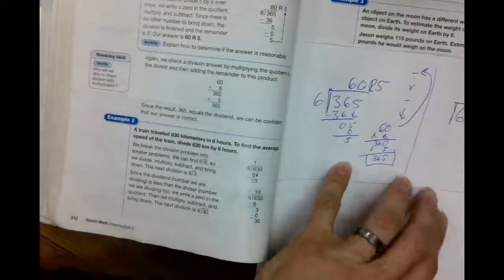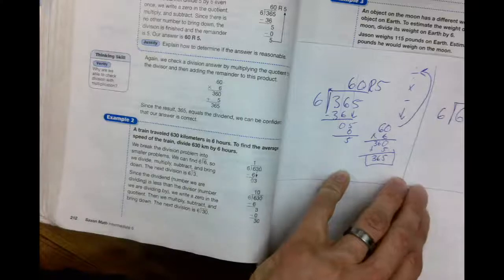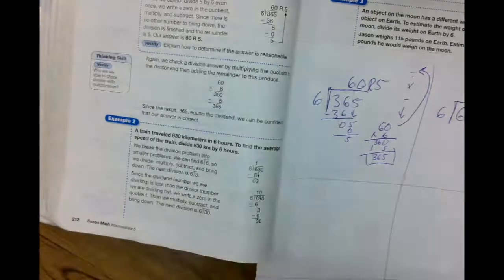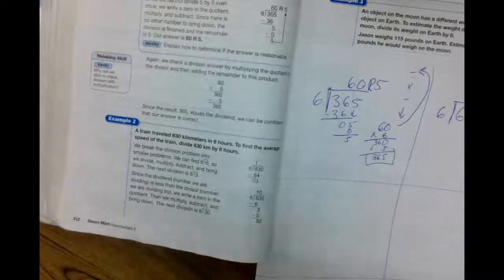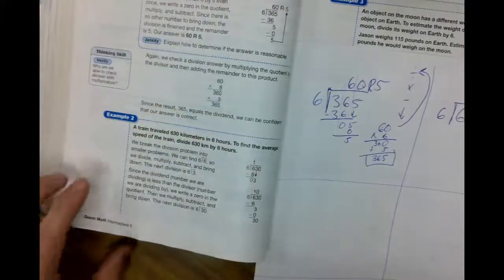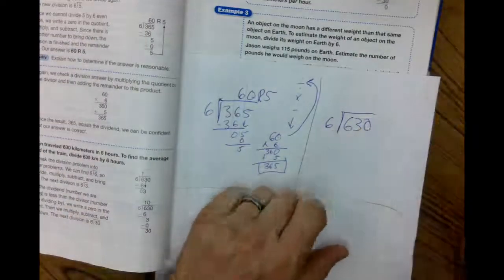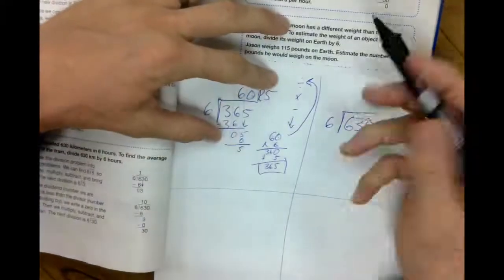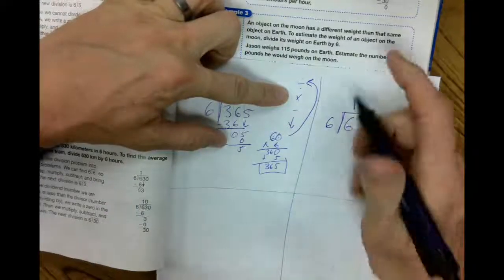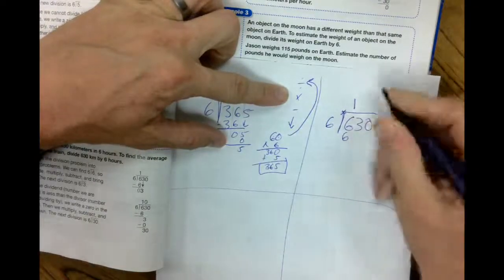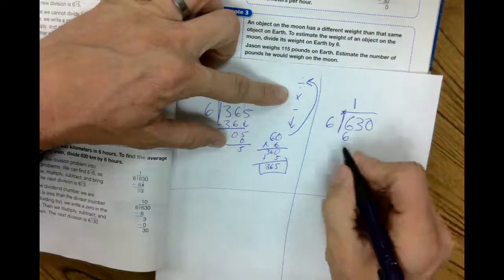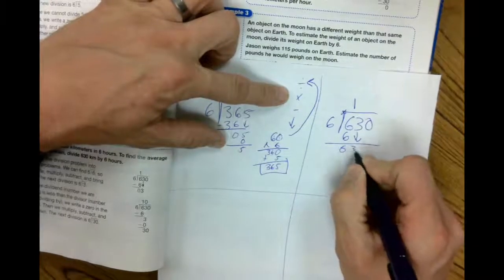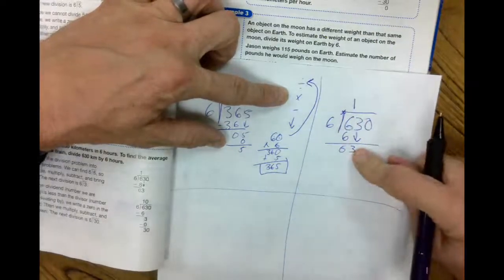Let's go on to example number two down at the bottom. A train travels 630 kilometers in six hours. To find the average speed of the train, divide 630 divided by six. 630 kilometers divided by six hours. How many times is six going to six? One. Second step. Multiply. One times six is six. See, I'm keeping it all nice and lined up. Subtract. Zero. Bring down. Three. How many times is six going to three? None.